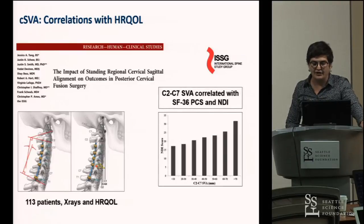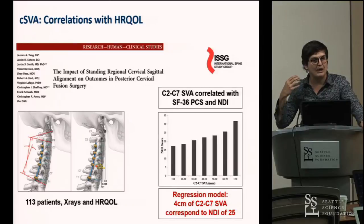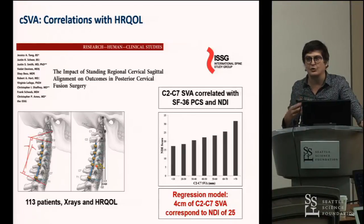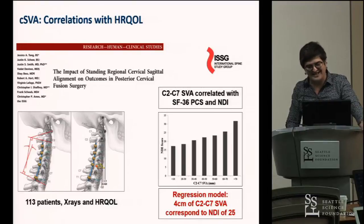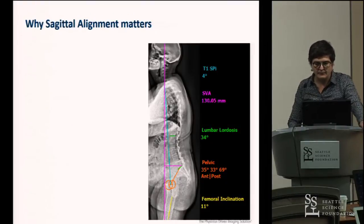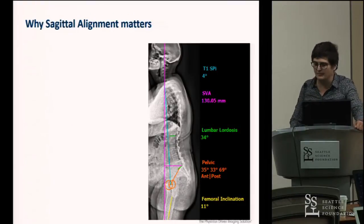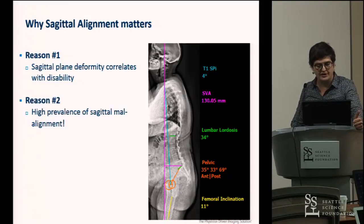At the level of the cervical spine, there are key parameters that correlate with patient-reported outcomes, which is why there has been a big push over the past 10 years in terms of sagittal alignment. Why does it matter? It matters because it correlates with disability.